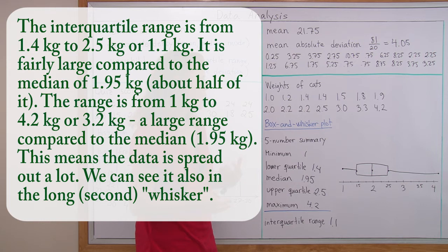And if we look at the range, the range of the cat weights is from 1 kilogram to 4.2 kilograms, which means the range is 3.2 kilograms. It's a large range, again, compared to the median of 1.95 kilograms. So this all means that the data is spread out a lot.